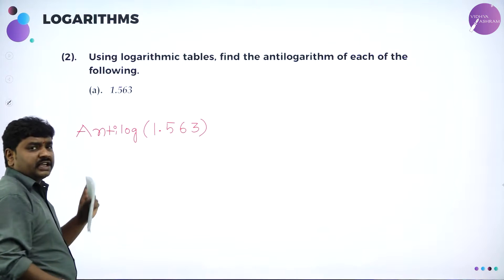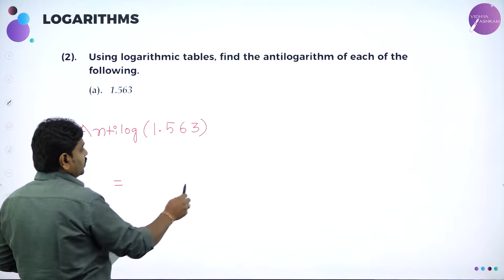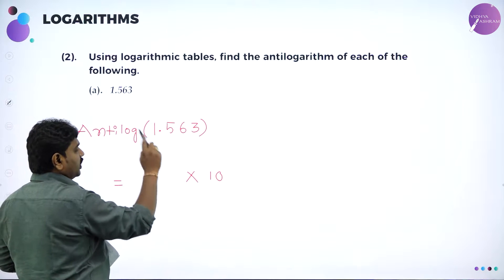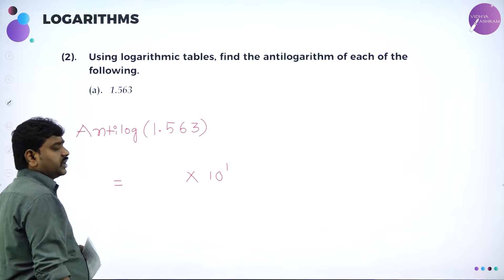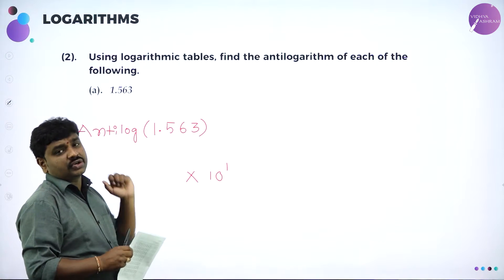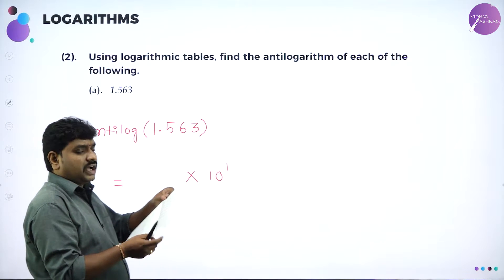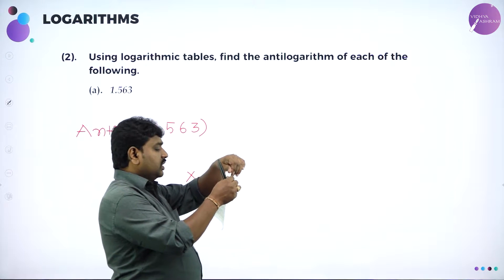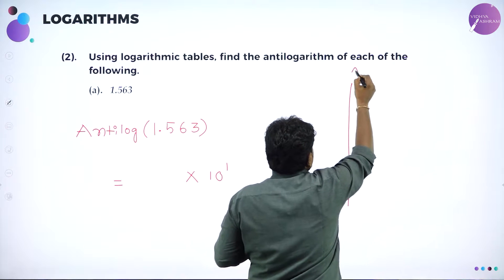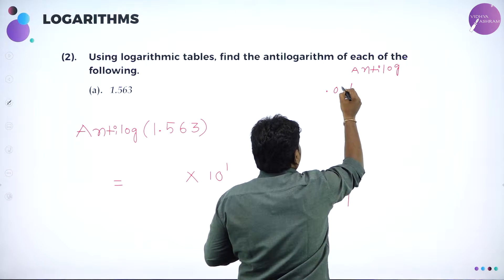How to find anti-log of 1.563? Before the decimal, whatever is present, write it as 10 to the power of that number. Here I have 1, so write 10 power 1. Anti-log always starts from 0.00 — open the anti-log section of your log table.